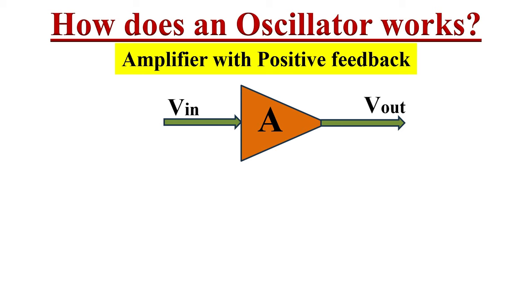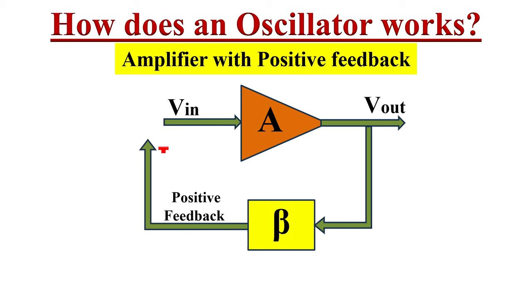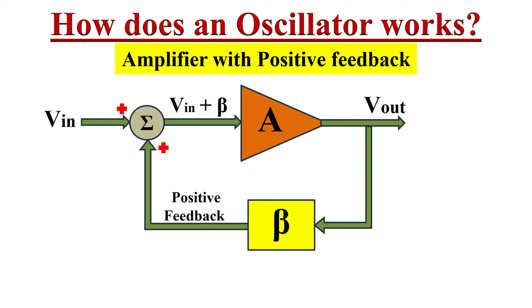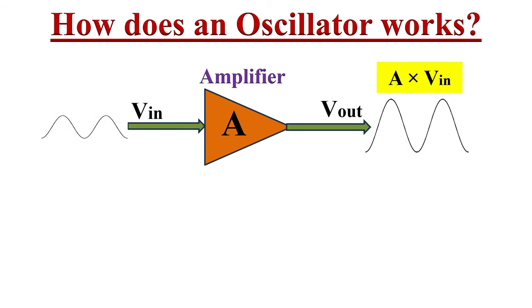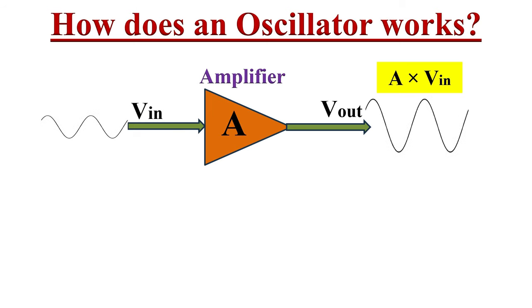Practically, oscillator circuits are nothing but amplifier circuits which are provided with positive feedback. Let's understand the working principle of an oscillator. When an input sinusoidal signal is applied to an amplifier, the input signal will get multiplied by the gain of the amplifier, and we will get an amplified signal at the output.